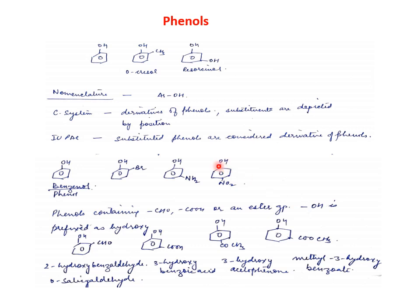Phenols, as we know, are compounds that have a hydroxy group directly attached to the benzene ring. Phenols are always aromatic because the OH is directly on the benzene ring. Those phenols which are derivatives — like base compounds or substituents — will all form a family of phenols.